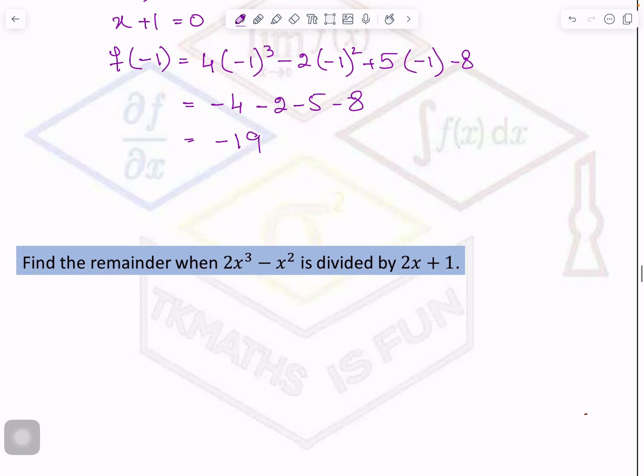So this question you can try yourself but I am just letting you know in this case when you will put divisor equals to 0, your x will be equals to minus half. So in the function which is 2x³ minus x², you will substitute the value of minus half. Use calculator carefully and you will get the remainder. Because when question is saying find the remainder, it means you will get the remainder. You will not get the answer 0.